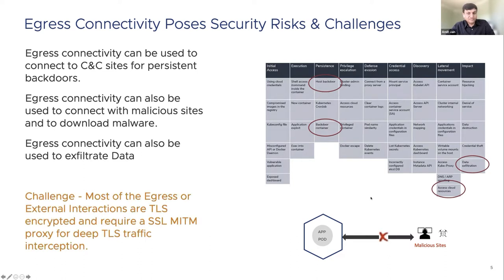Being able to observe and secure egress interactions is very important for cloud-native applications, but it's not easy. One of the main challenges of securing egress is that most egress interactions are TLS encrypted. To observe and secure these interactions, we require an SSL proxy that allows deep TLS inspection, which requires a special semantic known as SSL man-in-the-middle for TLS traffic interception.